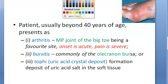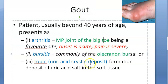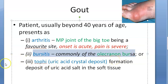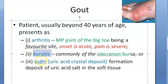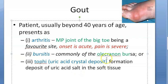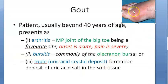Bursitis at the olecranon bursa — behind your elbow joint — is another favorite site. This is also called a student's elbow because they keep their elbow always on the table, but it can also be caused by gout. Then there are tophi, which are uric acid crystal deposits.